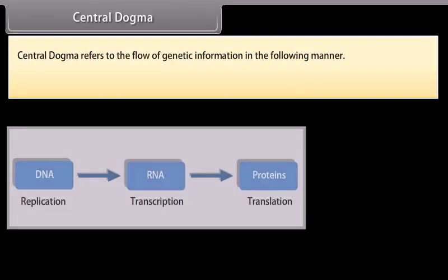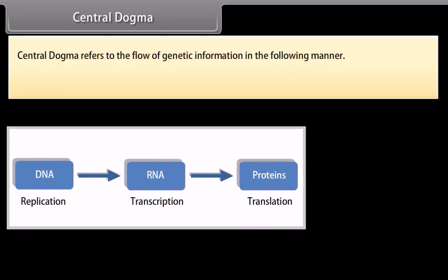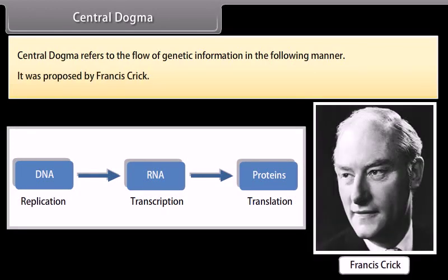Central Dogma refers to the flow of genetic information. It was proposed by Francis Crick.